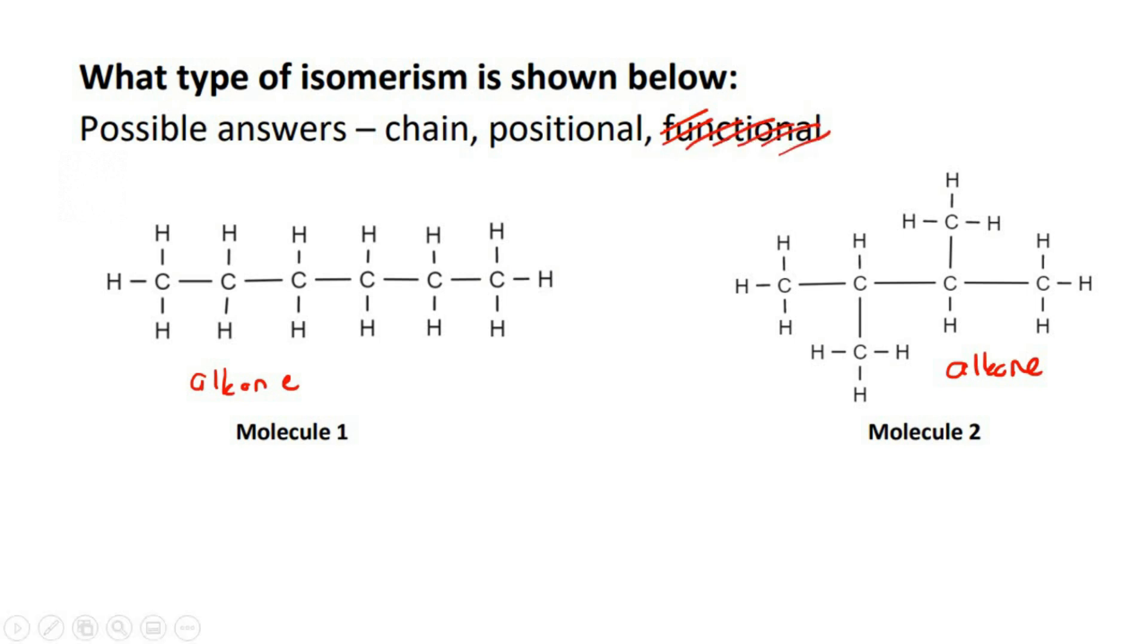Okay, we're looking for something that's different. If you look at the main chain, this one is 1, 2, 3, 4, 5, 6. This one is 1, 2, 3, 4 for the longest chain. So that's different. So that's the answer.